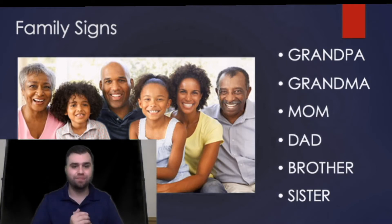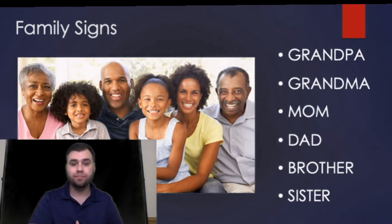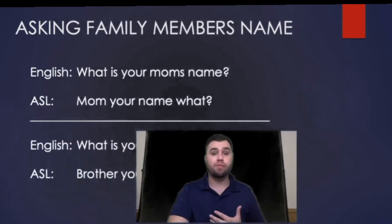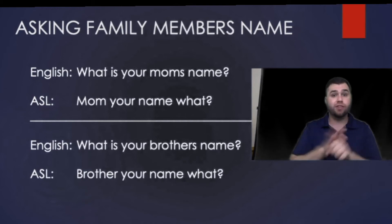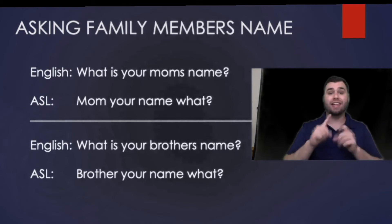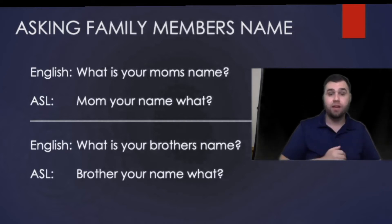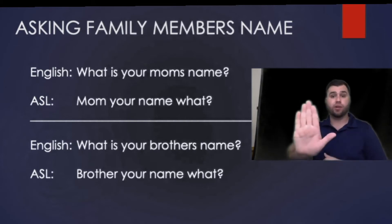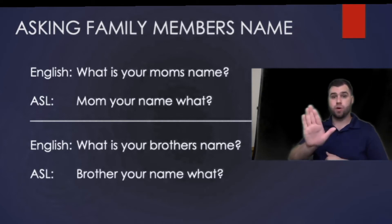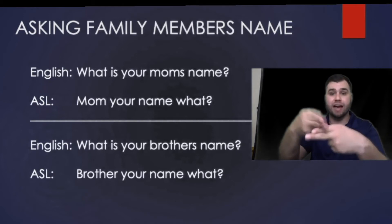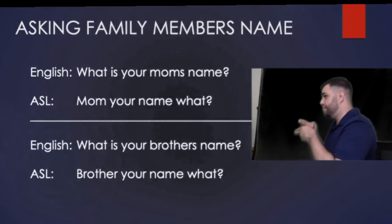Pause if you want to practice before continuing. Now we're going to start learning how to ask about a family member's name. In English: 'What is your mom's name?' Let's translate that to ASL. We start with mom, then your — a flat hand going towards them — then name, which uses H-handshapes tapping together, and then what, shaking your hand. So the sentence is: mom, your, name, what. Let me show you from the side: mom, your, name, what.